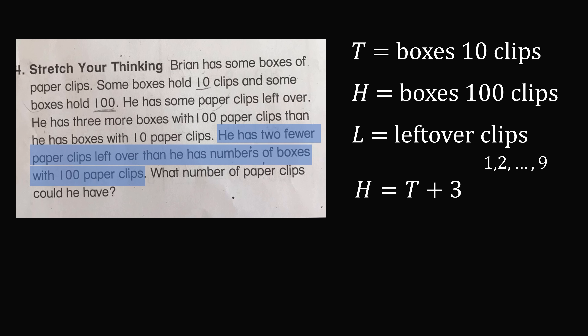Now, he has two fewer paper clips left over than he has numbers of boxes with 100 paper clips. In this case it goes the opposite way — we take the number of paper clips left over and add two to get the number of boxes with 100 paper clips. So L plus two is equal to H.